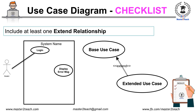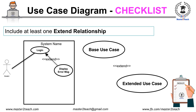Similarly, include at least one extend relationship in the use case diagram — for example, login and display error message. The extended use case may or may not be called when the base use case is executed. Here, login is the base use case whereas display error message is the extended use case. Like in the include relationship, the extended use case is called automatically by the system if the condition matches, so there doesn't exist any relationship with the actor. Make sure there is no line between the actor and the extended use case. The extend relationship is shown by a dotted line with an arrow pointing to the base use case from the extended use case — the opposite direction of include — with a label extend. Check whether the extend relationship arrow points to the base use case and is labeled with extend.